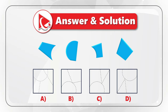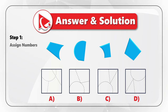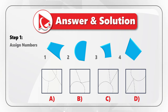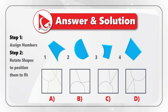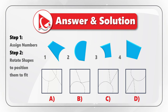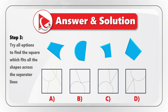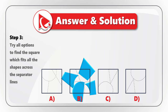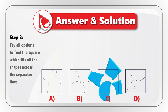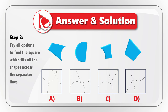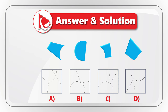I was able to solve this challenge in three simple steps. In step one, you need to assign the numbers. In step two, you need to rotate the shapes to position them to fit. And in step three, you need to try all the options to find the square which fits all the shapes across the separator lines.